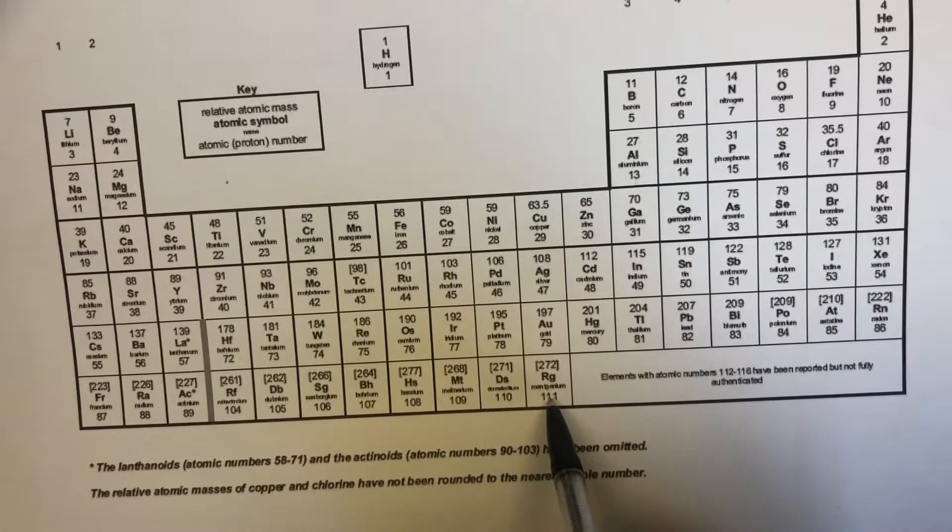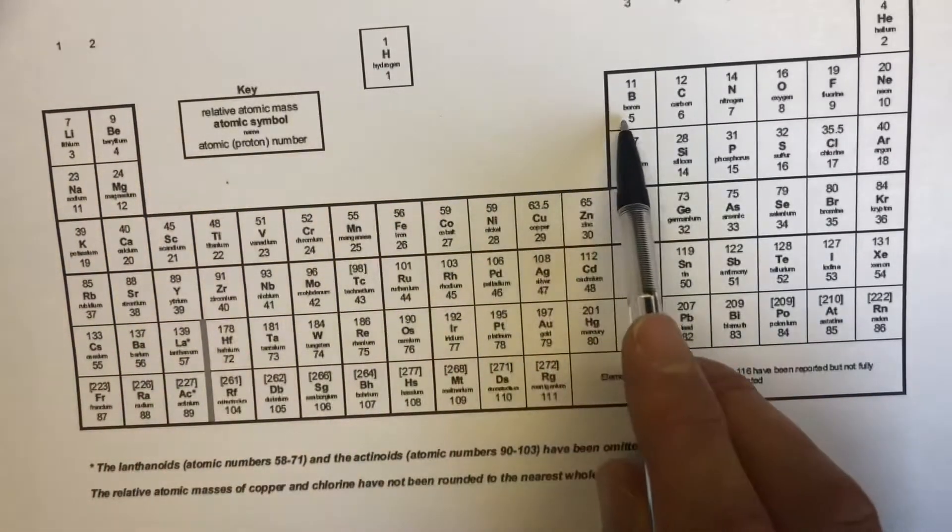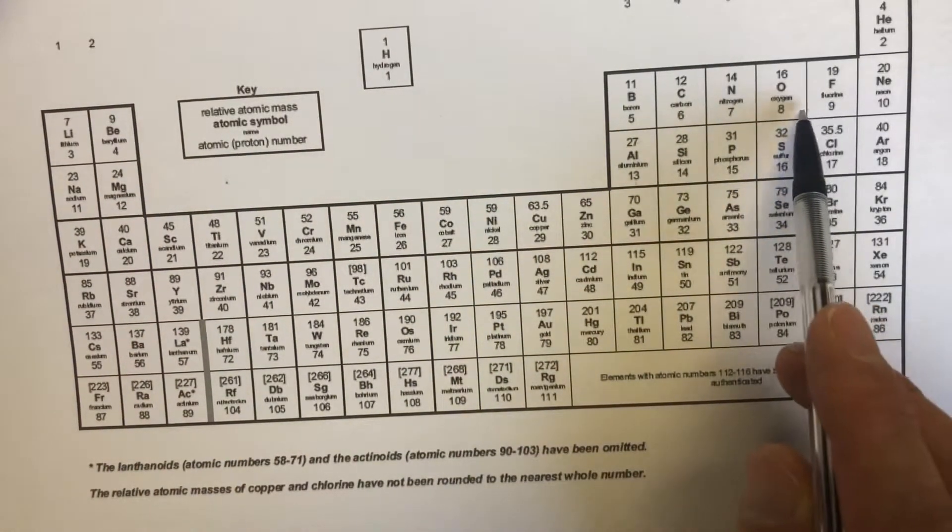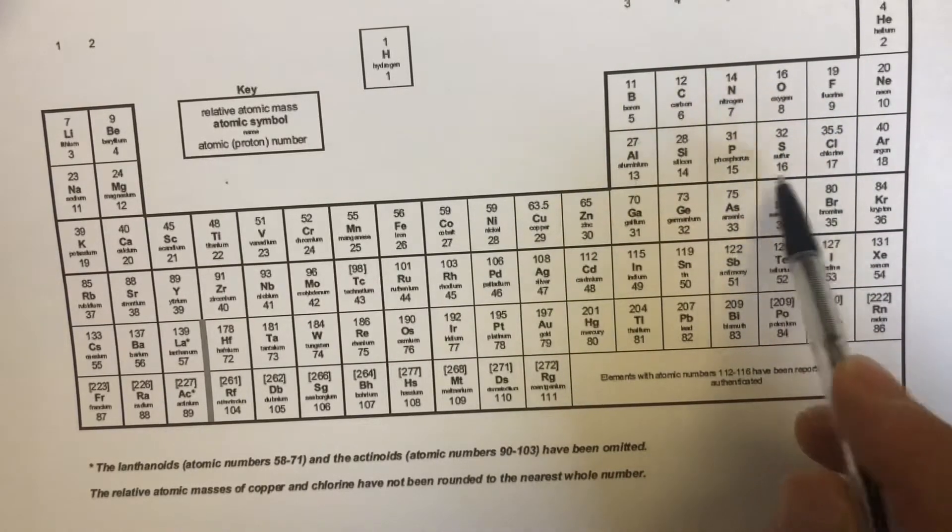Because there are no gaps in these atomic numbers. There's no spaces where we go from say eight to ten. It goes up one each time so every element in this periodic table has been discovered.